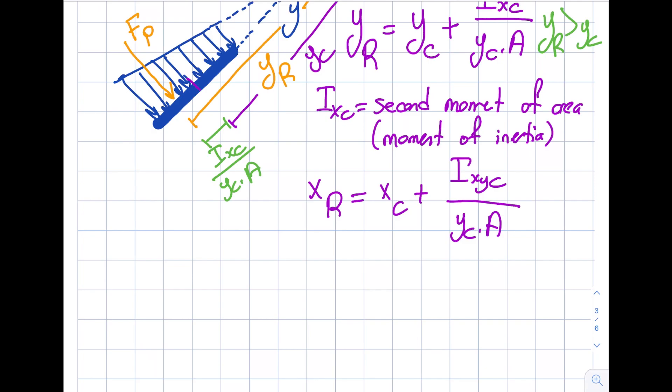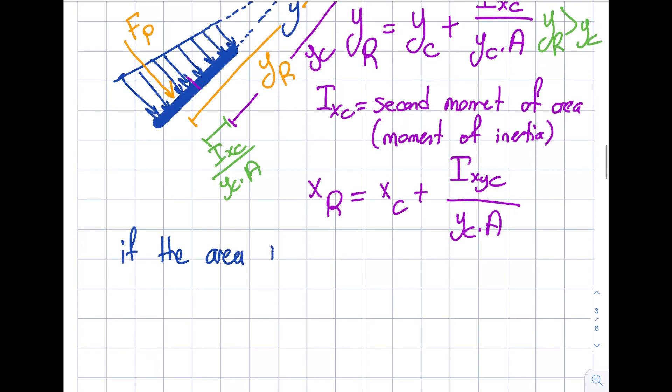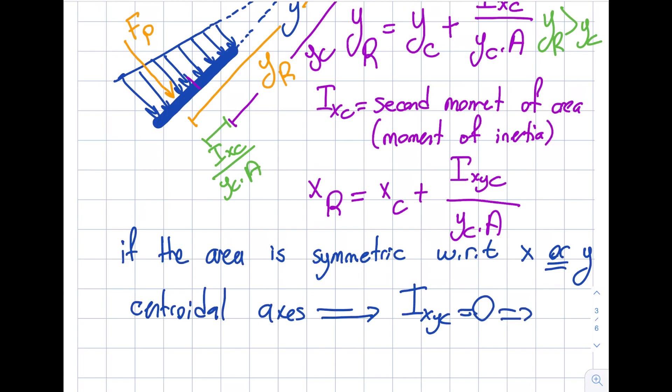If the area that I'm dealing with, which is submerged under some kind of fluid, is symmetric with respect to X or Y centroidal axes, then my IXYC will be equal to zero. Obviously from here, I will get XR equals XC. That's quite possible and quite common.